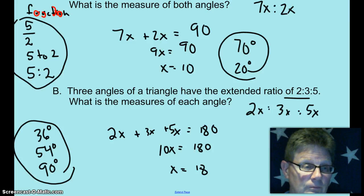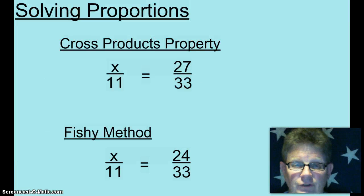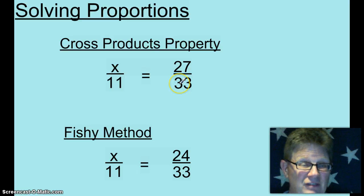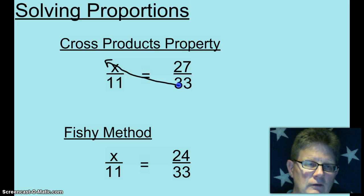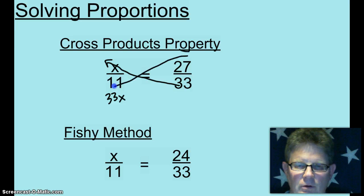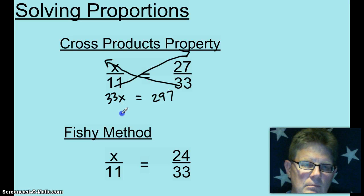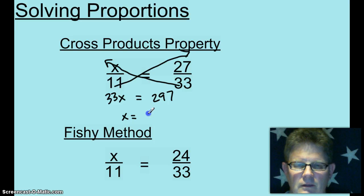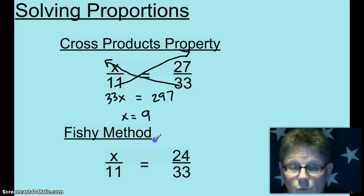Let's go on to solving proportions. In the centuries that I've been teaching, I have come up with three ways that make sense to me to solve proportions. The first way is the cross products. Bottom right to top left, multiply those together. Bottom left times top right, 297. And then divide both sides by 33 to get 9.